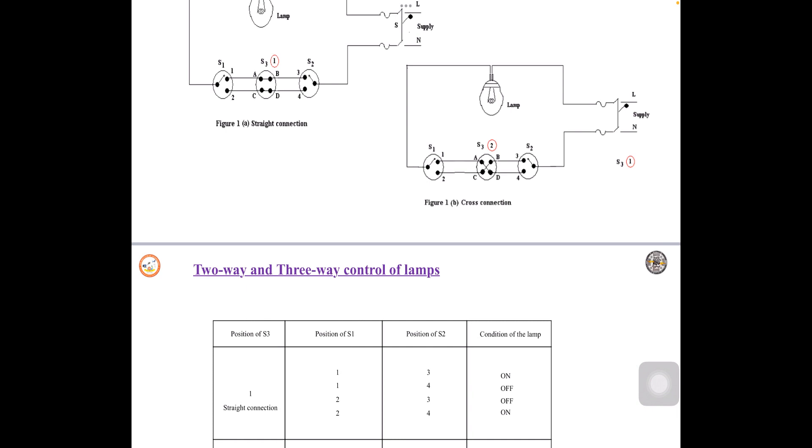Next, the position of S1 is at 1, the position of S2 is at 4. Now from 1 to 4 there is no interconnection. So obviously the lamp will be off.